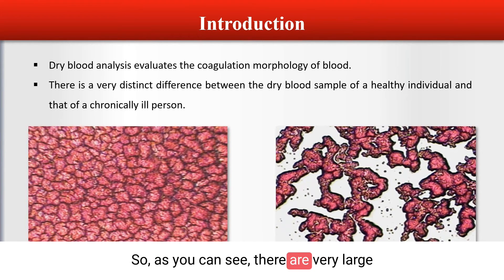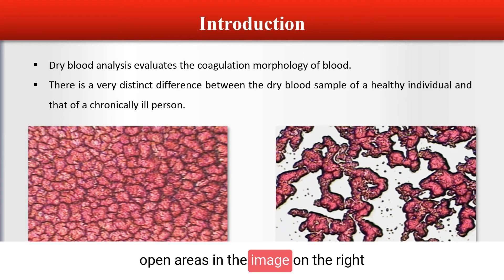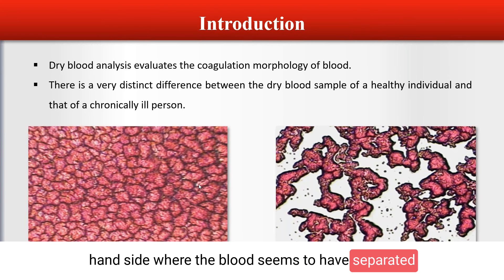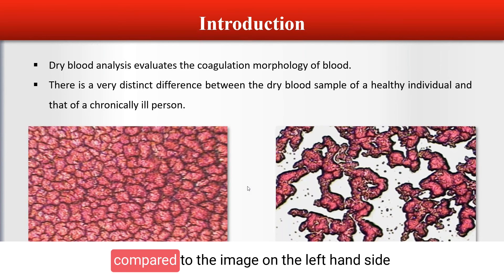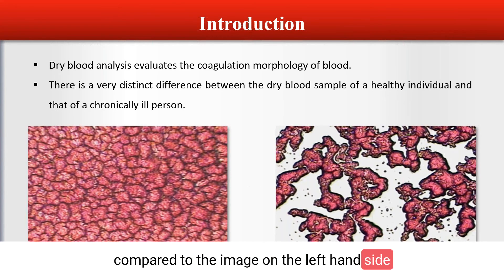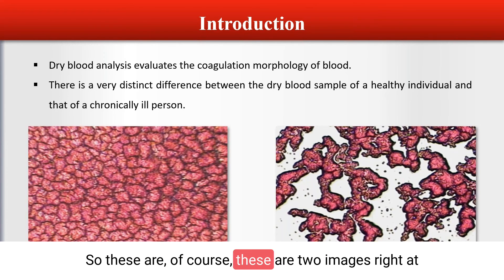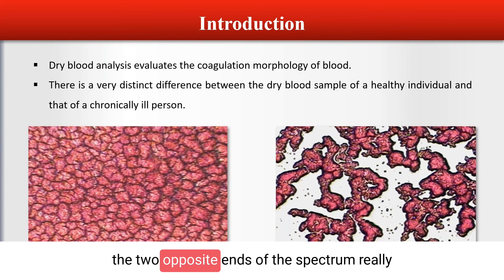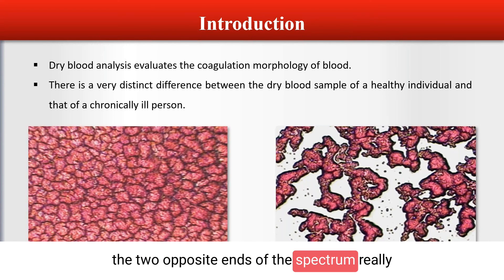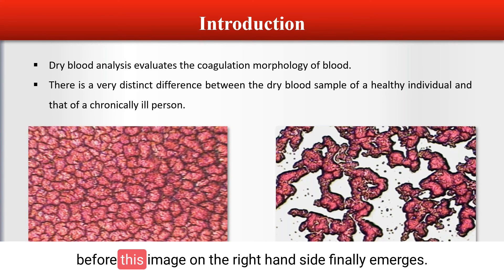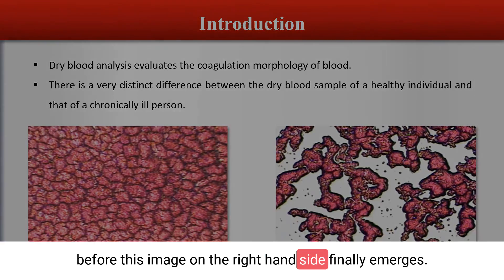As we can see, there are very large open areas in the image on the right hand side where the blood seems to have separated — quite different compared to the image on the left hand side of what normal blood should look like. These are two images at the two opposite ends of the spectrum, and there are of course many anomalies and patterns that we can see before this image on the right hand side finally emerges.